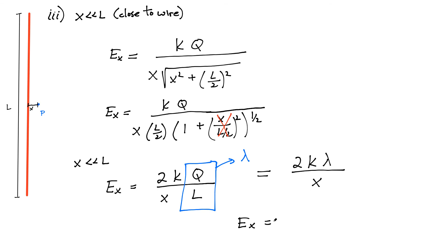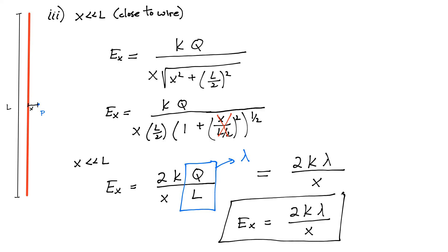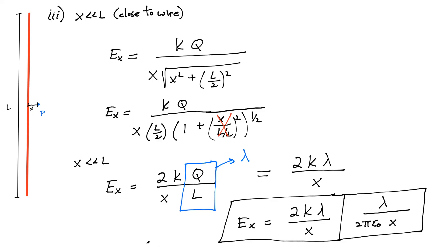This is the exact same result you get using Gauss's law — I have a video on that you can go have a look at. If you want to find the field produced by an infinitely long wire, or a really long wire, you can use Gauss's law due to the symmetry of the problem, and you'll get to the same result here.